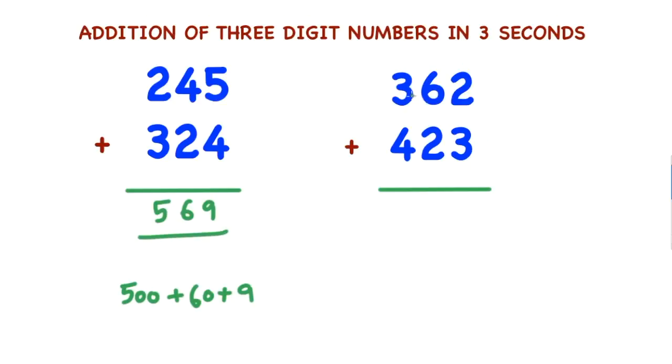Now come to this number. In the hundreds place, 3 is there — consider 300. In the hundreds place, 4 is there — consider 400. 300 plus 400 is 700.